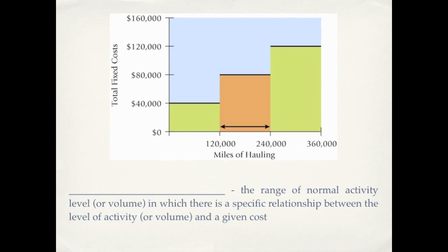Between 240,000 miles and 360,000 miles, our fixed costs are $120,000. So the definition we need to know here is in regards to a relevant range. Within a relevant range, we can be sure that our fixed costs do not change in total.